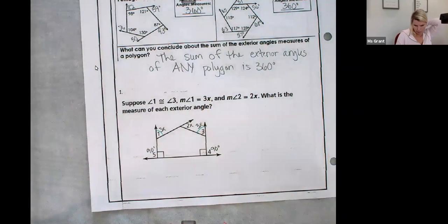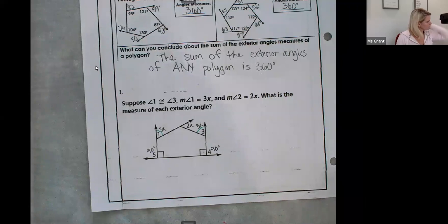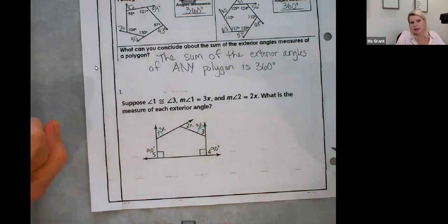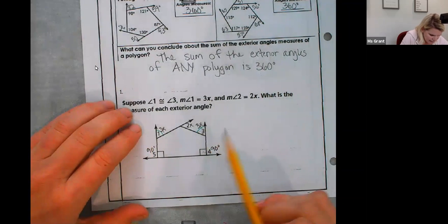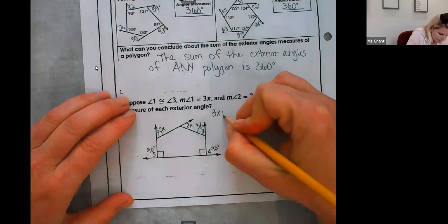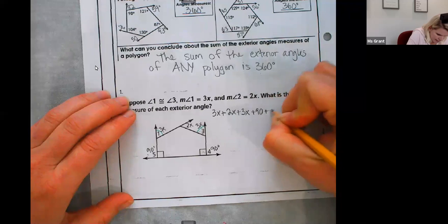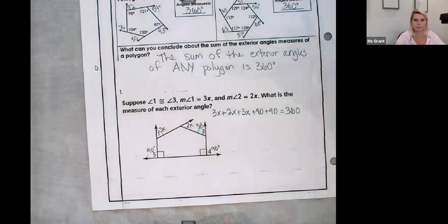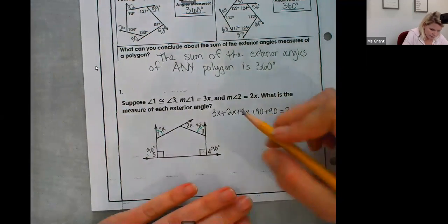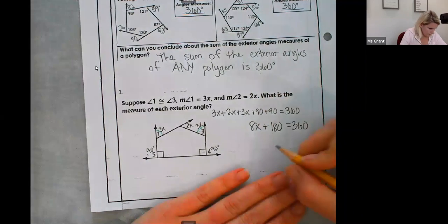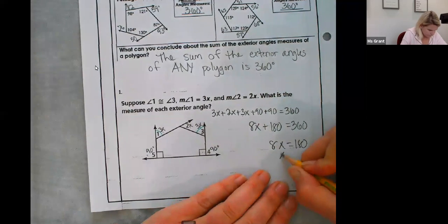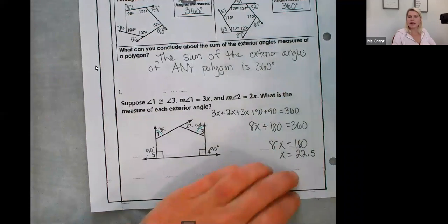So I need new people. I have to add up all of the exterior angles and they're going to equal 360. So I'm just going to go in order: 3x plus 2x plus 3x plus 90 plus 90 equals 360. That is 3 plus 2 plus 3, 8x plus 90 plus 90, 180. You're just solving for x. 22.5. 180 divided by 8, 22 and a half.